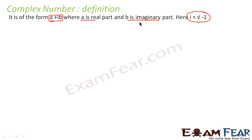So, a is the real part, b is the imaginary part, and i is the square root of minus 1. For example: 2 plus 3i, 7 plus 9i, etc.